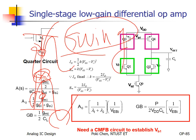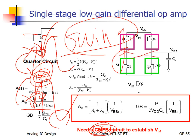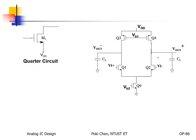How to compensate for such process variation happening to your output? We need the common mode feedback circuit — to push back the final common mode output voltage to the middle. So later in this chapter, we need to focus on how to design a good enough common mode feedback circuit to stabilize your output voltage.